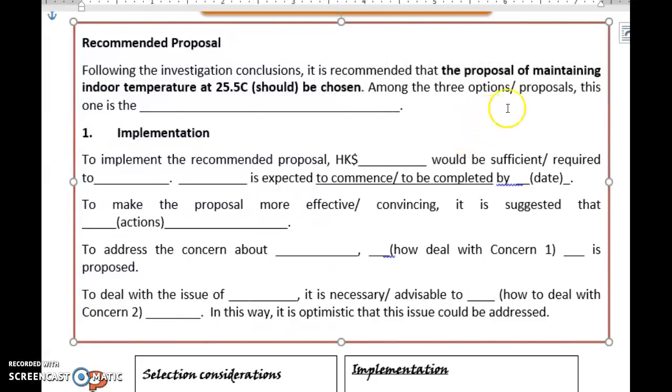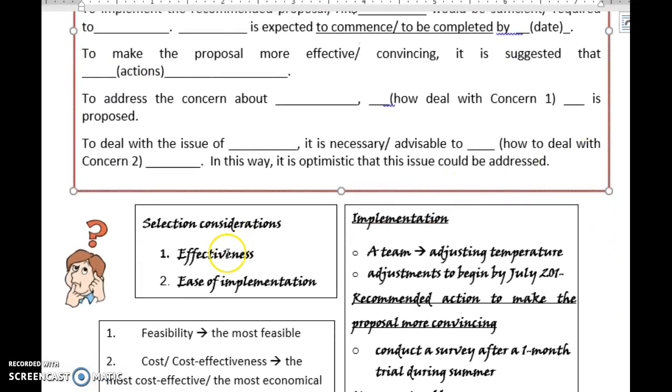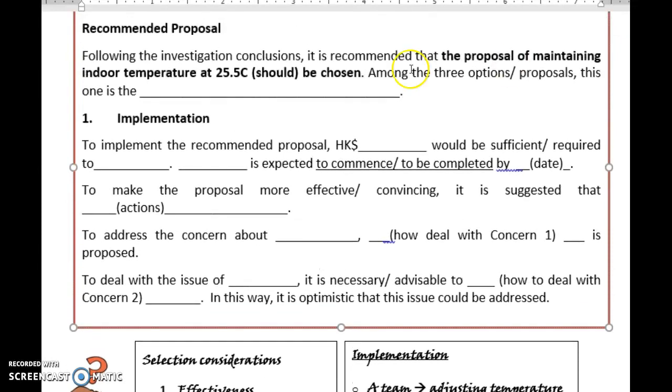Next, among the three proposals, this one is the... Let's refer to the considerations: effectiveness, ease of implementation. Please change them to the adjectives. We need the adjectives. Effectiveness - so I will change it to the most effective. Because you are making a comparison among three things, so we need to use the superlative form.